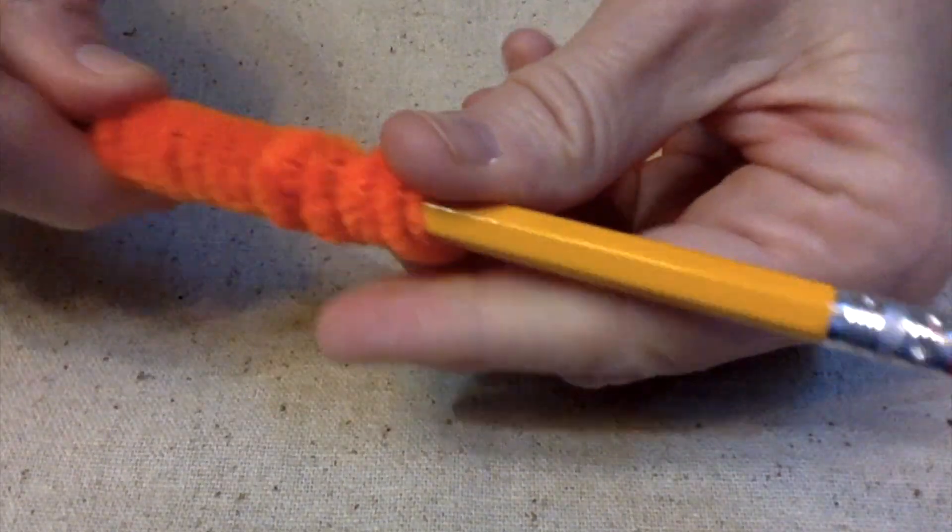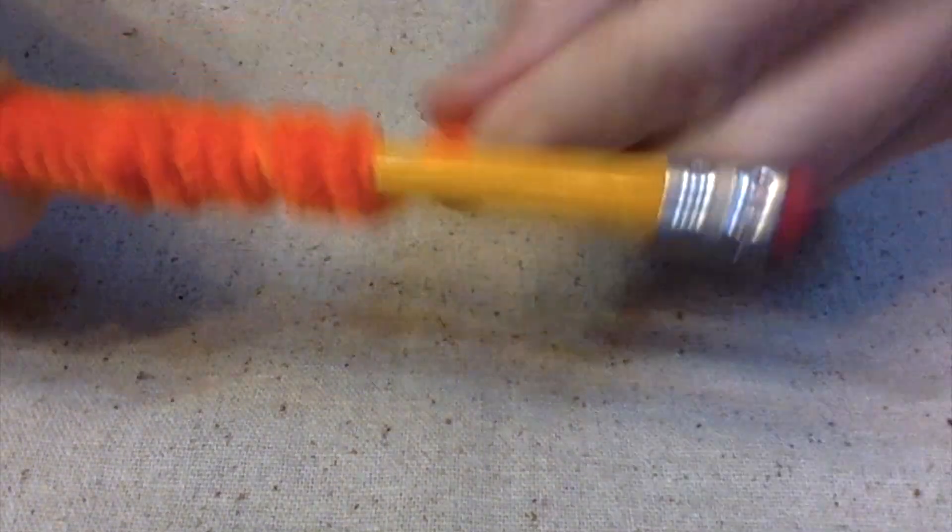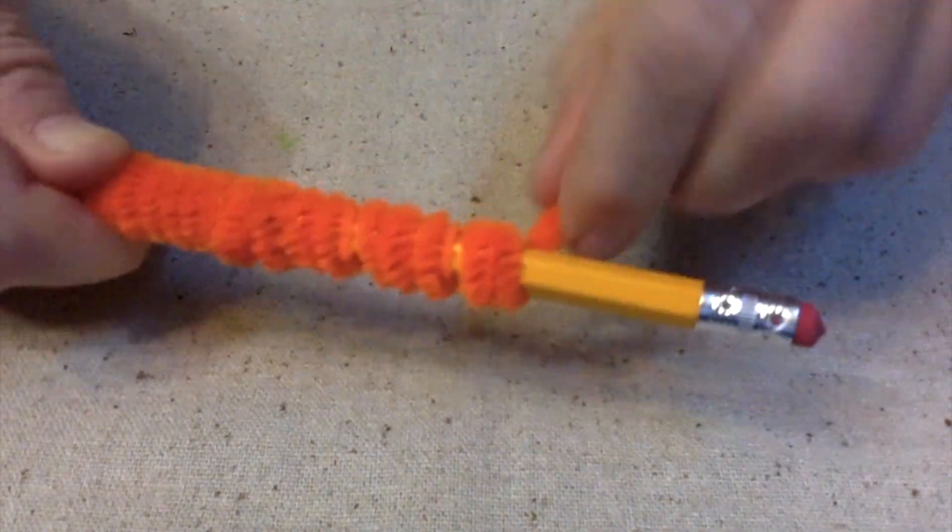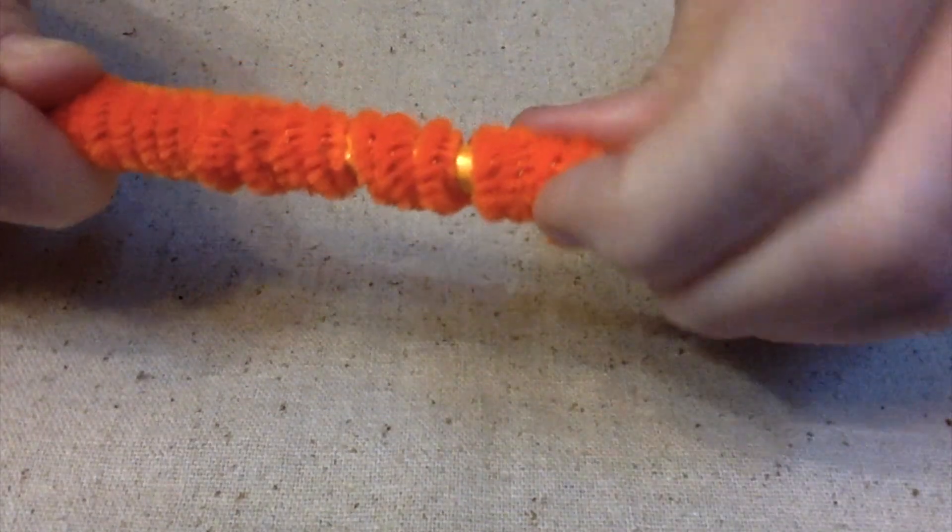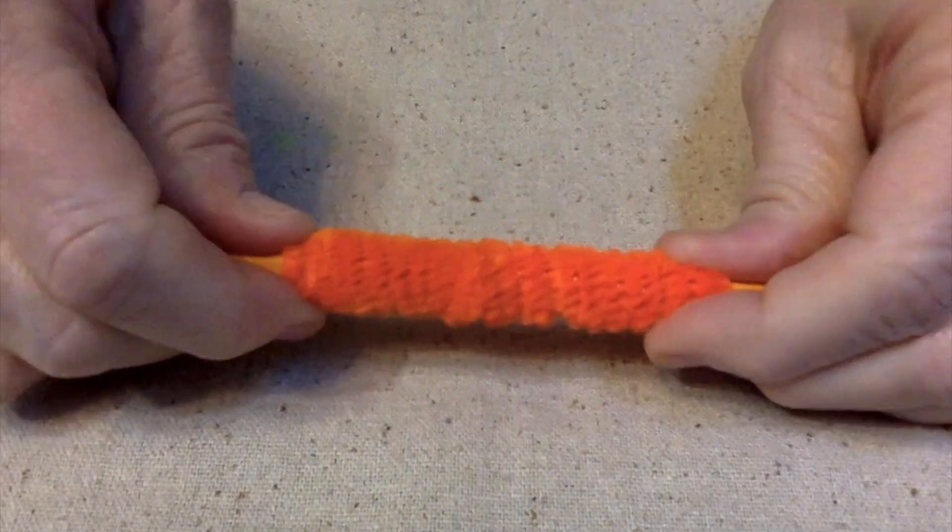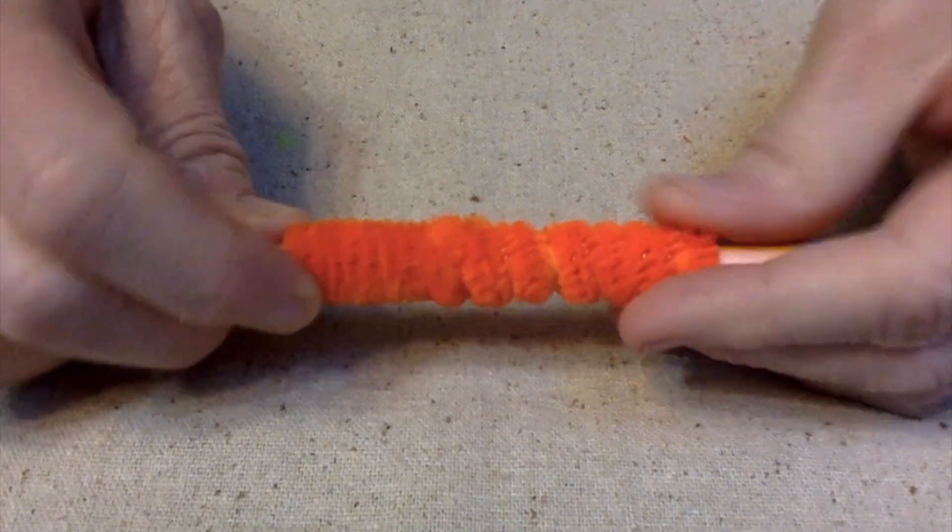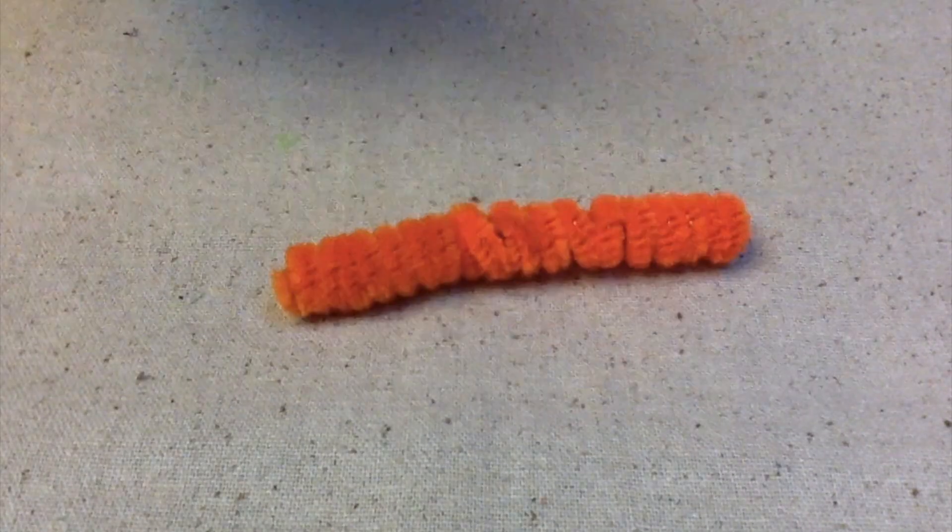And as you're wrapping, just kind of squish them together. All right, so once we get all of our pipe cleaner on the pencil, smoosh them together, and then you're going to remove it off the pencil.